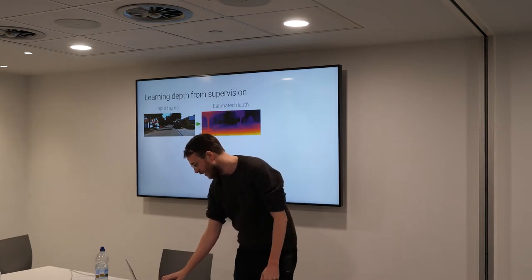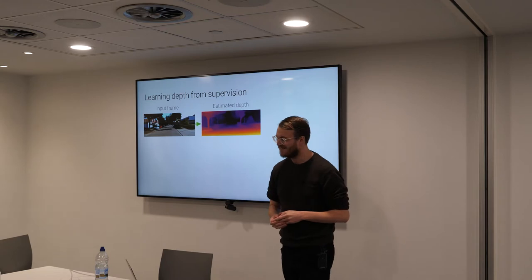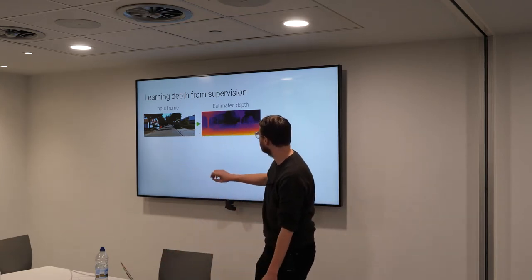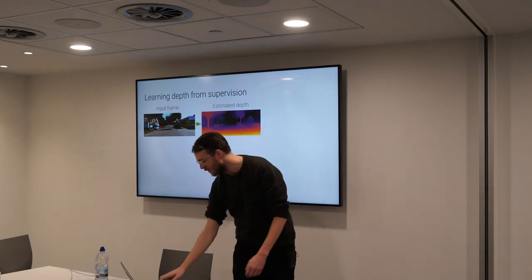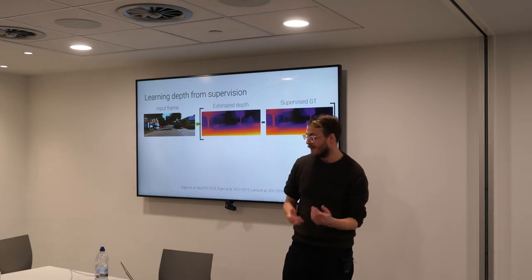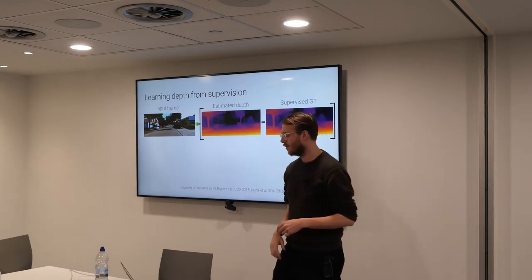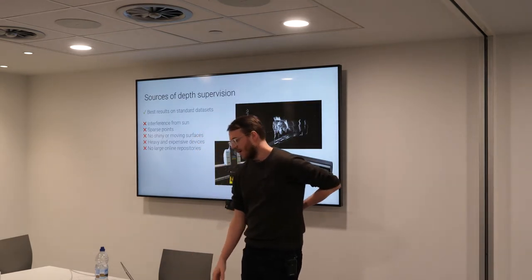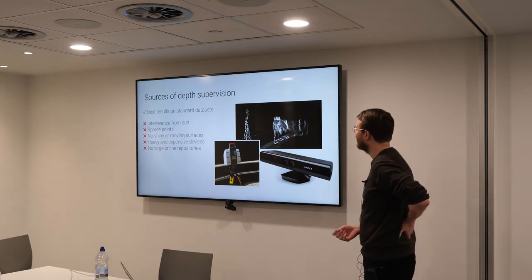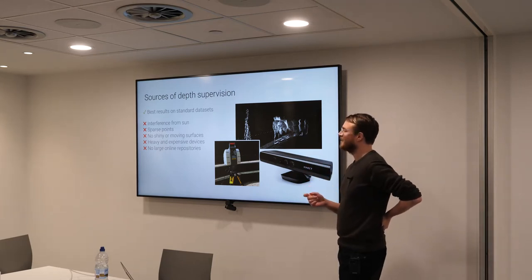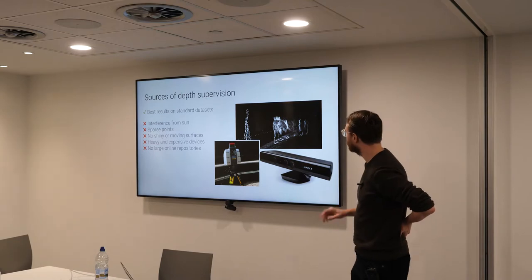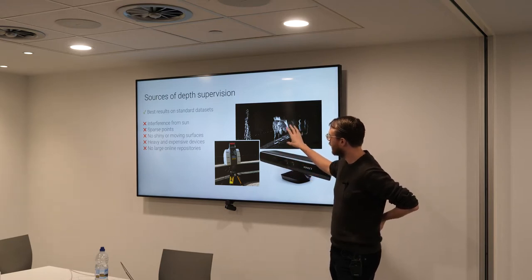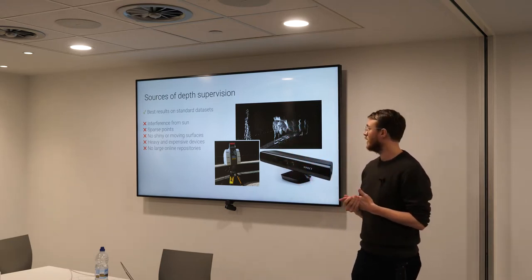We could learn from supervision: we have our image, the network spits out a depth map, and if we had supervised depth we'd use some loss — maybe squared loss — and we're done. But the problem, and hopefully you believe it at this point, is that it's hard to get ground truth depth supervision. There are different sources of data: cheap structured light sensors, laser scanners, lidars, and so on, but they inherently each have their own limitations.